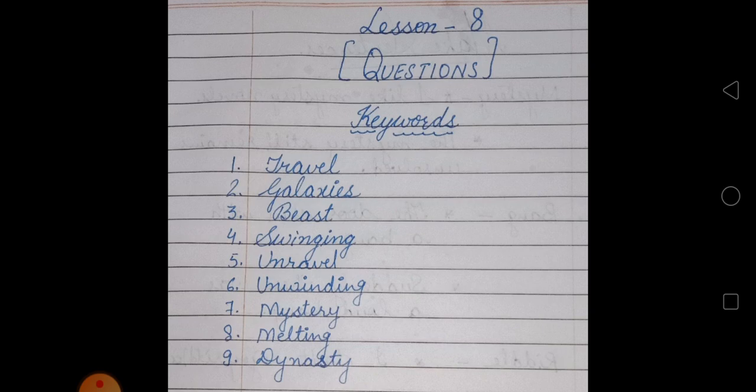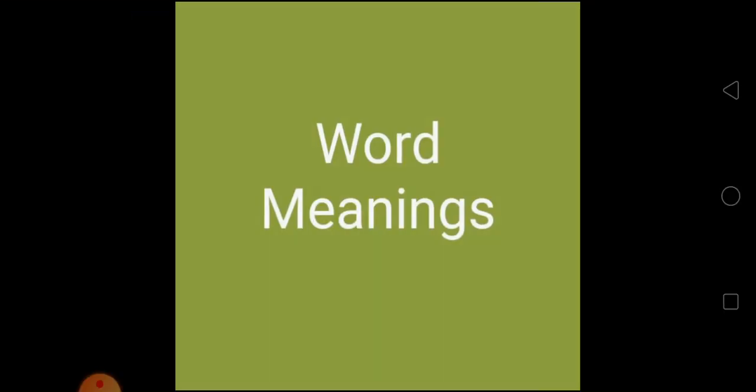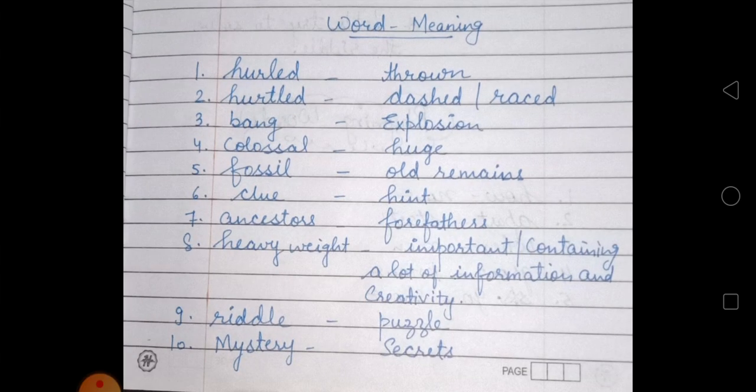After this, let's start word meanings. What is the first word? Hurt. Hurt kia hota hai? Kisi chiz ko phenkna. Meaning is throne.